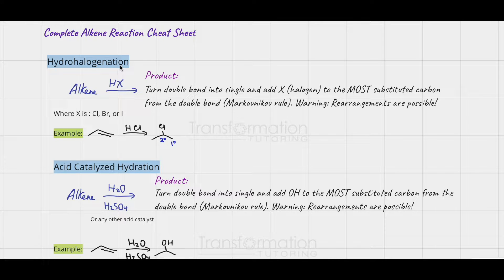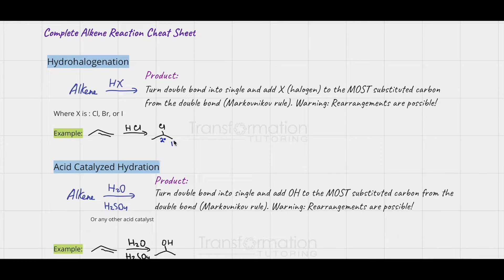The first reaction is hydrohalogenation. The reagent is HX where X is a halogen such as chlorine, bromine, or iodine. In this reaction, our double bond turns into a single bond and we add X — chlorine, bromine, or iodine depending on the reagent — to the carbon from the double bond that is more substituted. This carbon is secondary because it's attached to two carbons, and this carbon is primary because it's attached to one carbon. So we add our chlorine to the more substituted carbon. The other carbon gets the hydrogen.